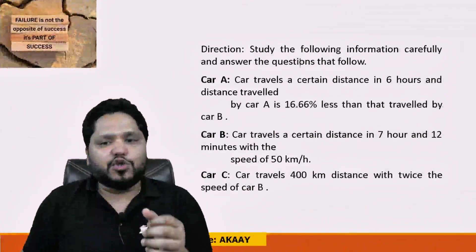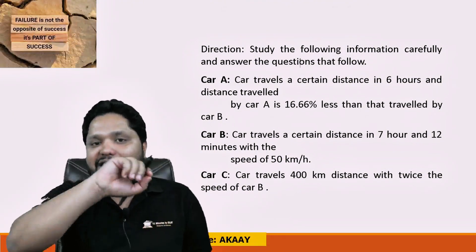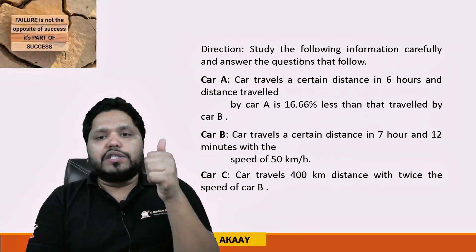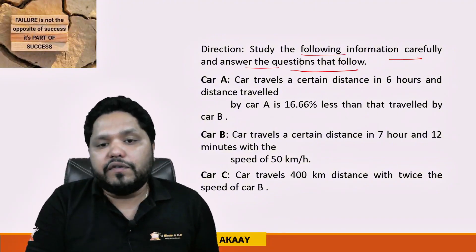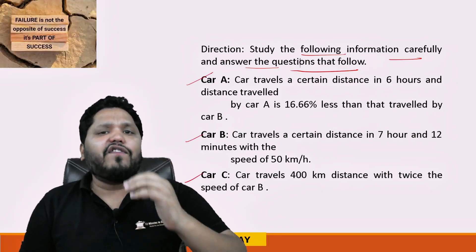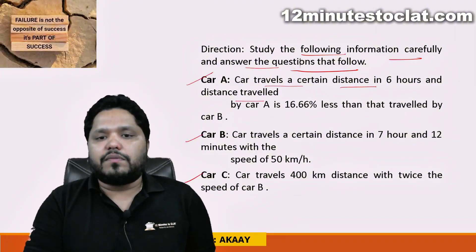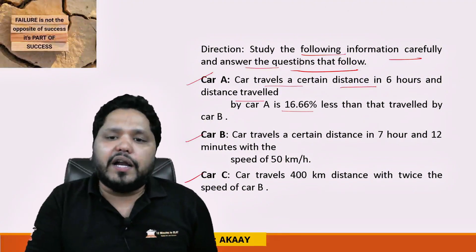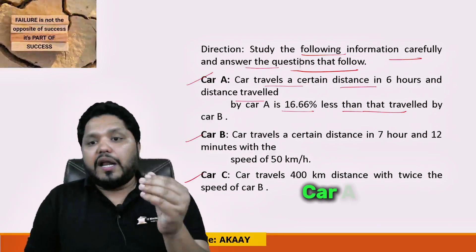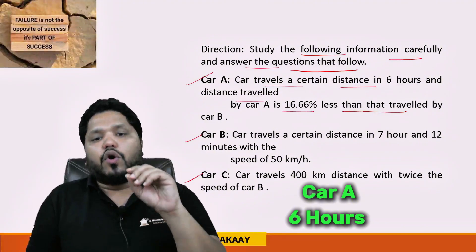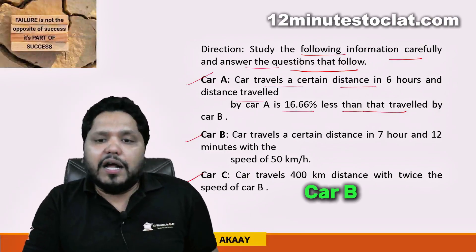So today we have a Time, Speed and Distance based caselet. One paragraph is given — let's understand it first, then we will try to solve it. The information given is about Car A, Car B, and Car C — three cars. Car A travels a certain distance in 6 hours, and the distance traveled by Car A is 16.66% less than that traveled by Car B.